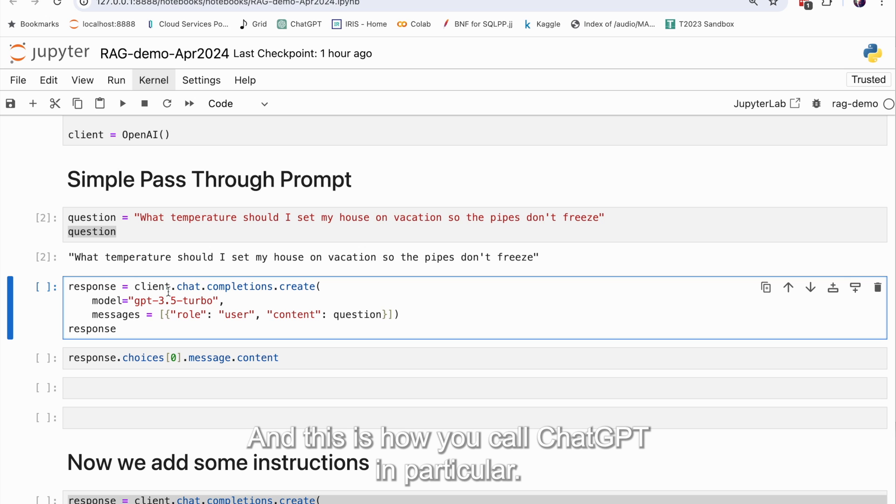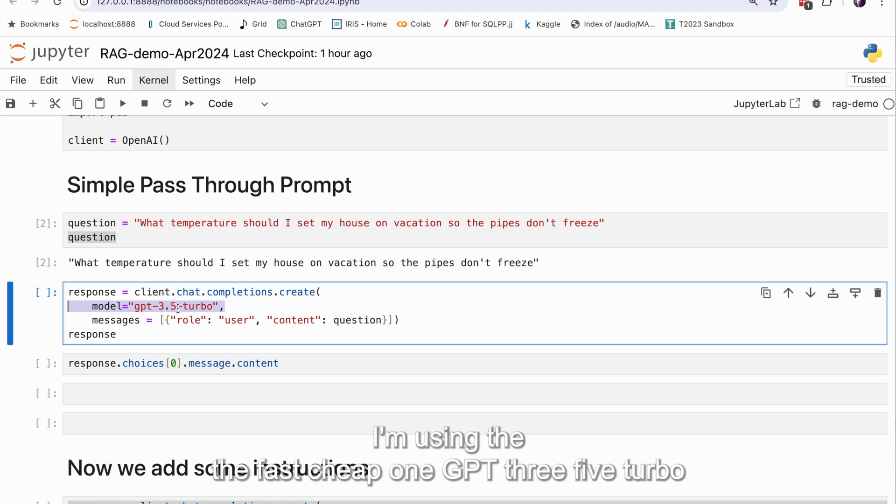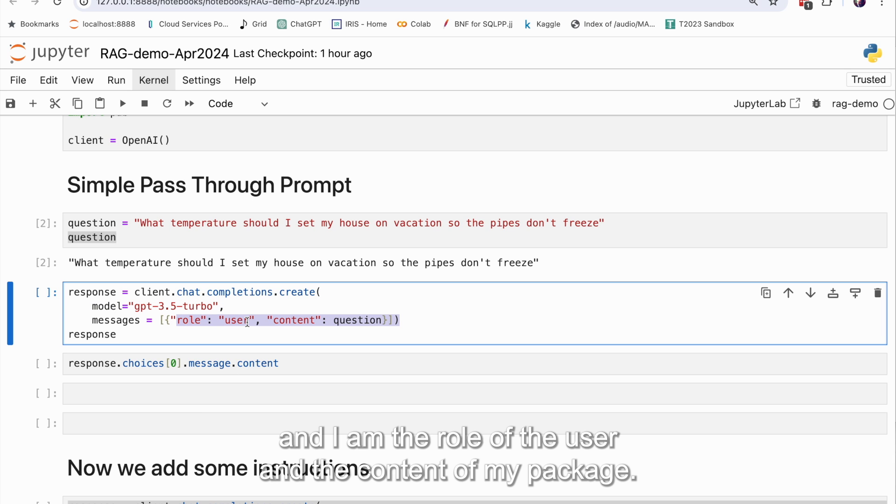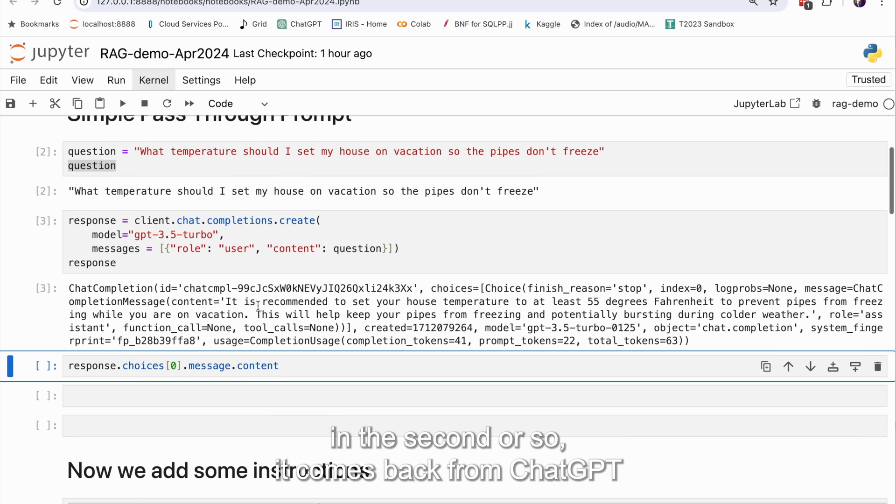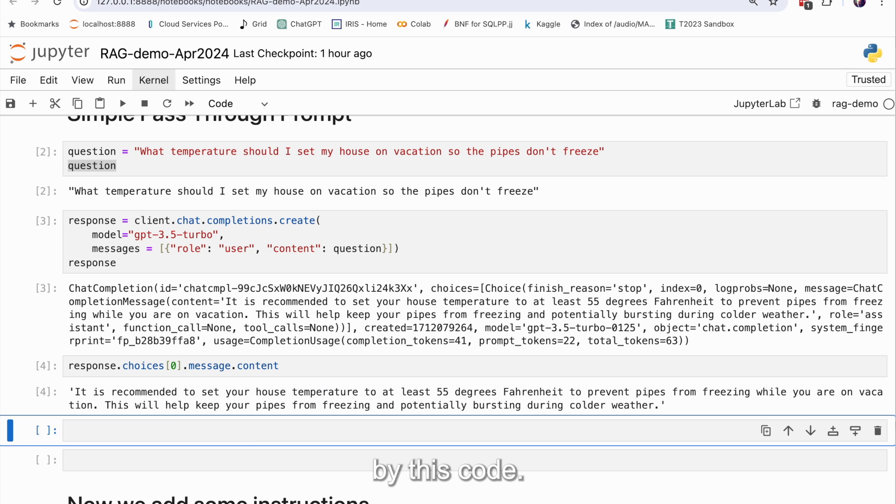And this is how you call chat GPT in particular. Most of the models look kind of like this. There's some API here. You pass the model name that you'd like to use. I'm using the fast, cheap one, GPT-3.5-Turbo, and basically I'm asking the question here. And I am the role of the user, and the content of my package is this question. So if I do that in a second or so, it comes back from chat GPT, and it has a bunch of parameters and attributes and stuff like that. But you can pull out the actual response by this code, the first choice, the message attribute, the content attribute of that message.